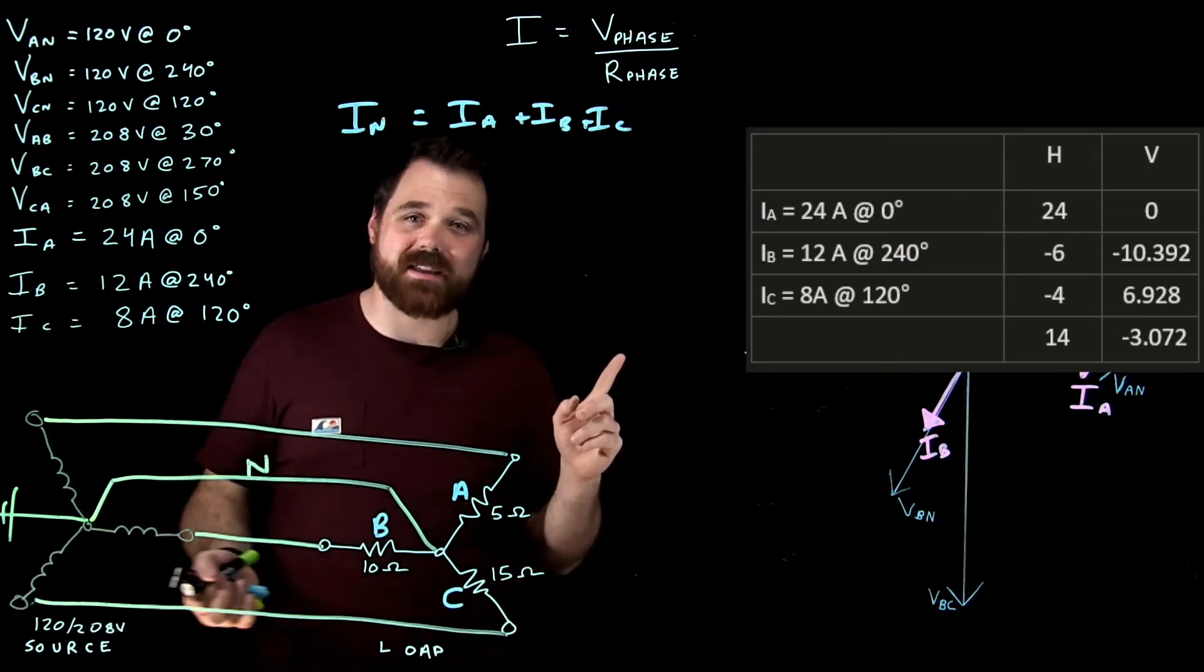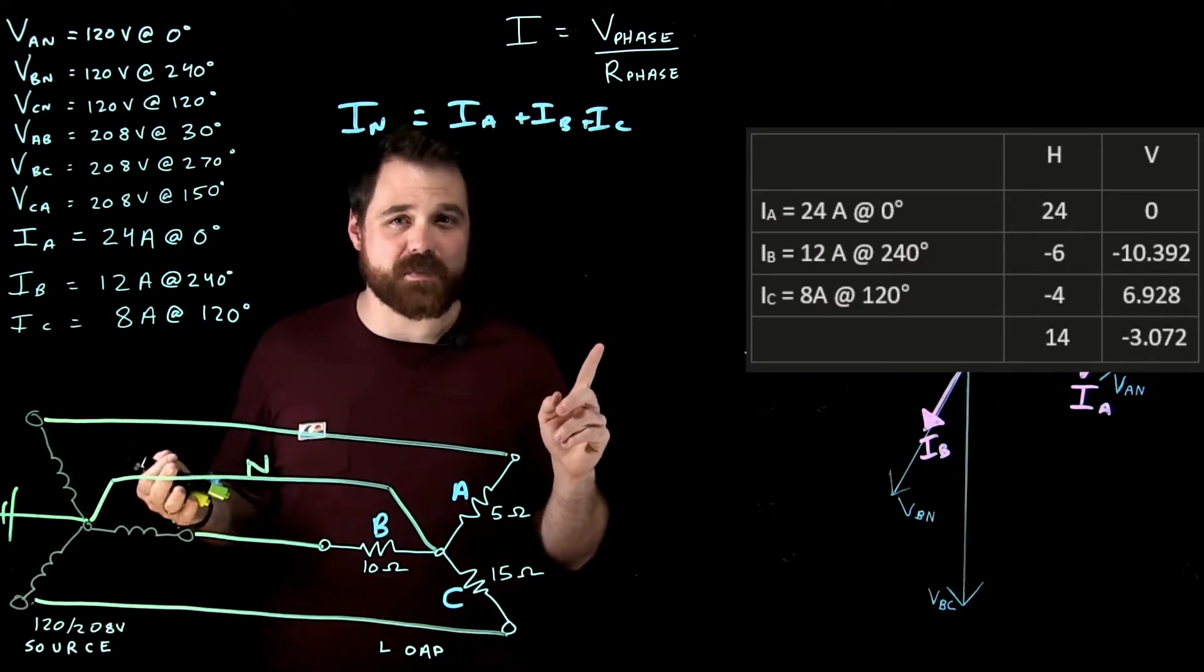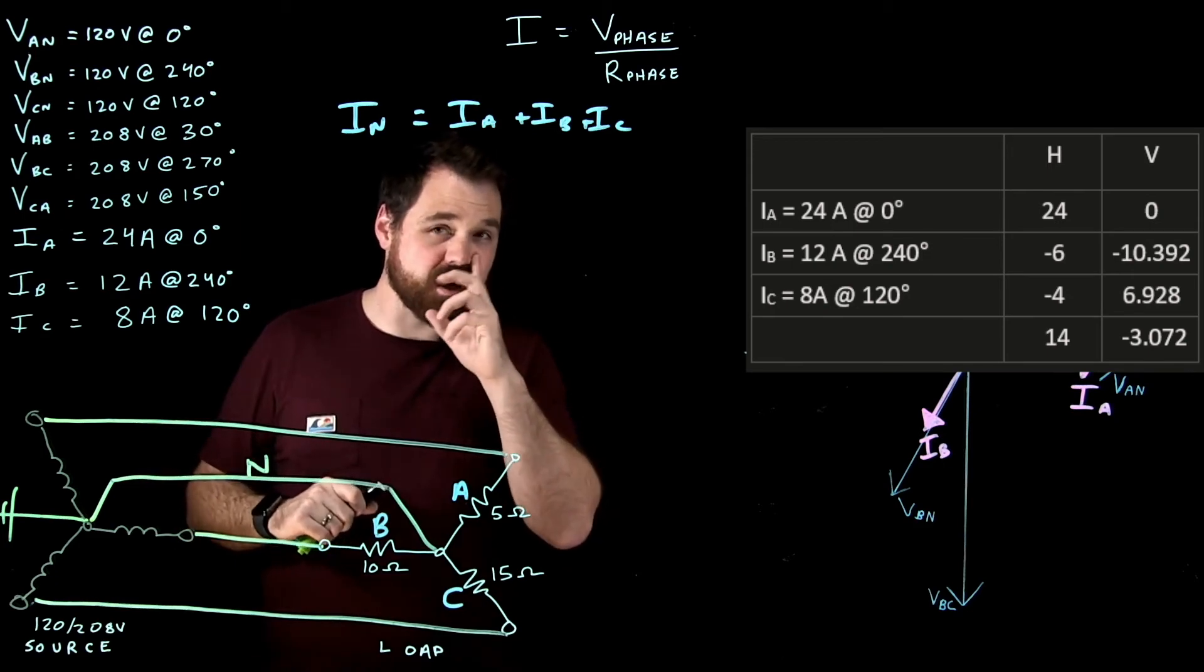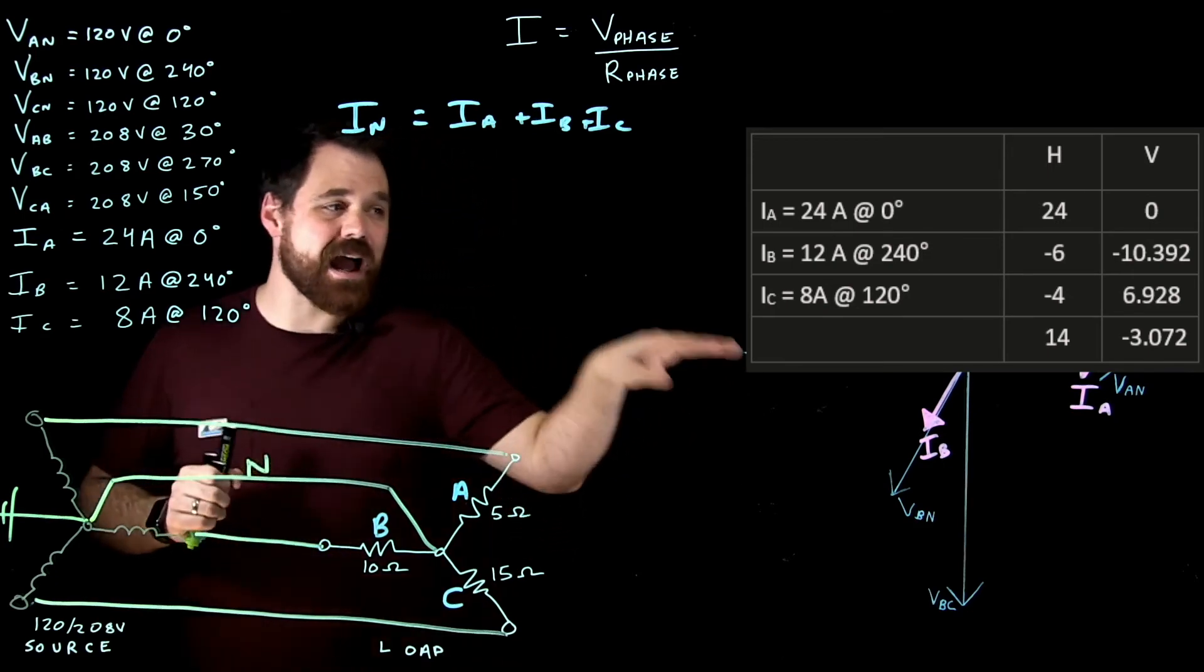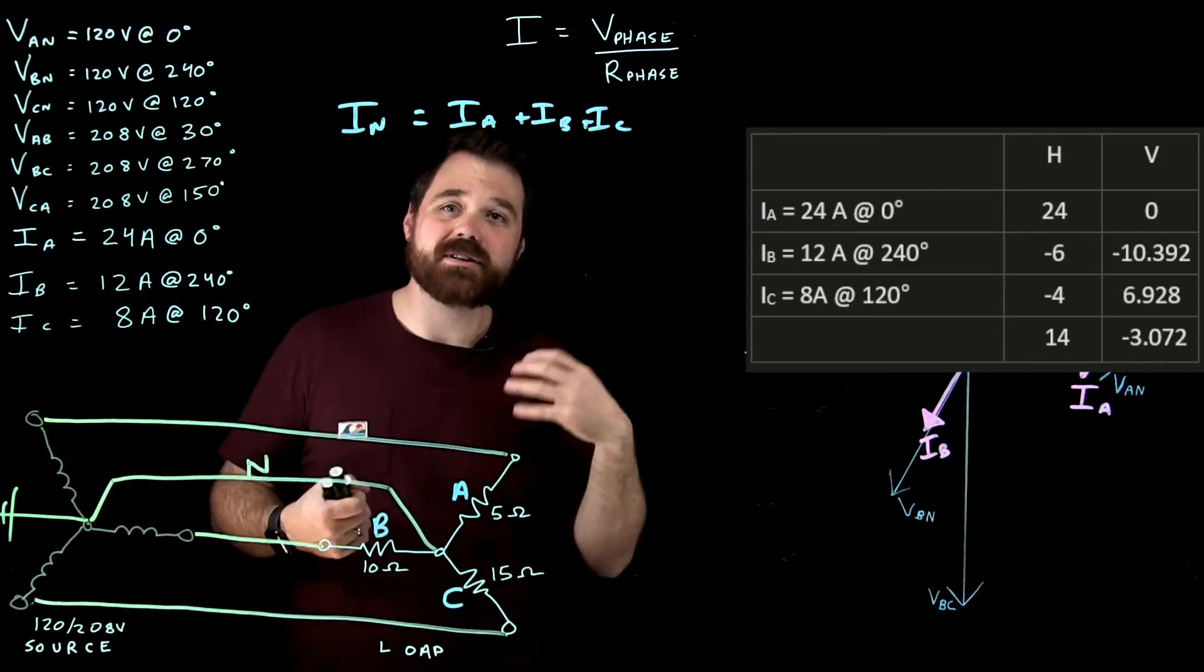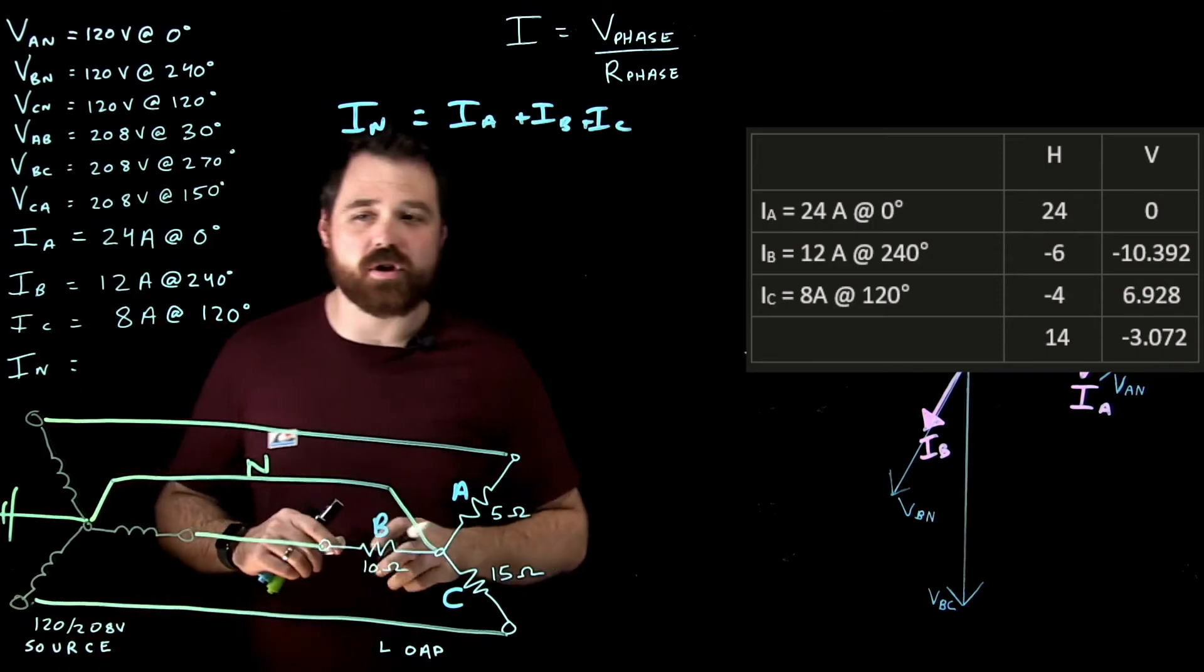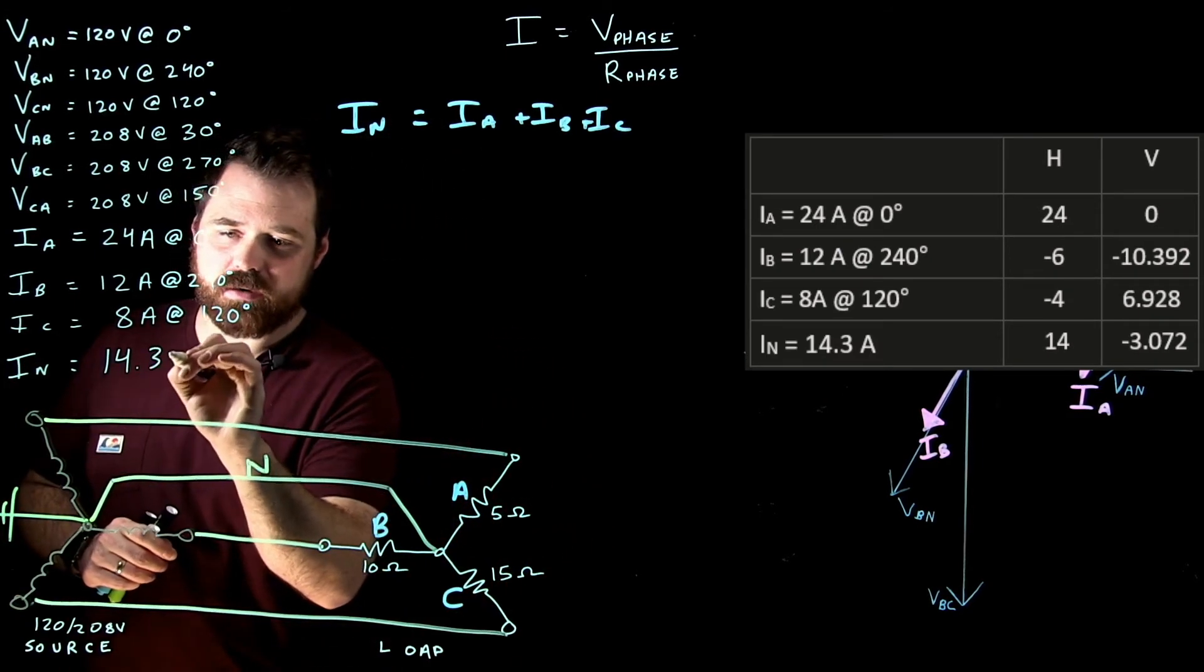Now, I take that chart, and I take that information. I've got a positive 14 as my horizontal, and a negative 3.072 as my vertical, which tells me that when I go back to my phasor diagram, that's going to be down, over, and then down. Now, I use those two numbers, I do Pythagorean's theorem, and I end up with a neutral current. And that neutral current is 14.3 amps.